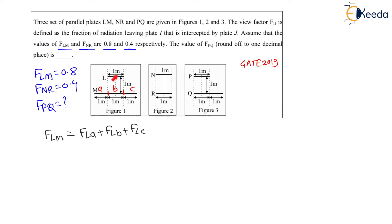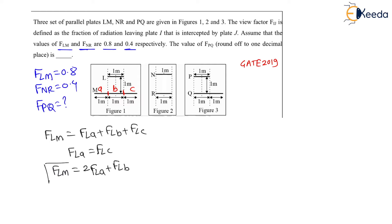For plate L, the parts A and C of plate M are symmetric. Therefore F_LA equals F_LC. So F_LM becomes equal to 2·F_LA plus F_LB. This is our first relation.